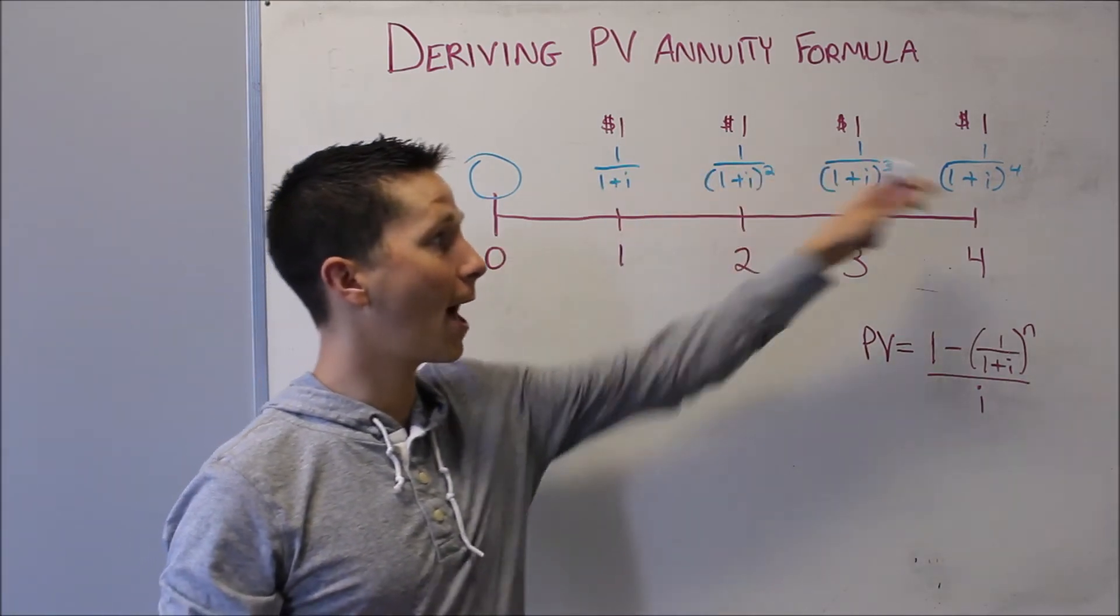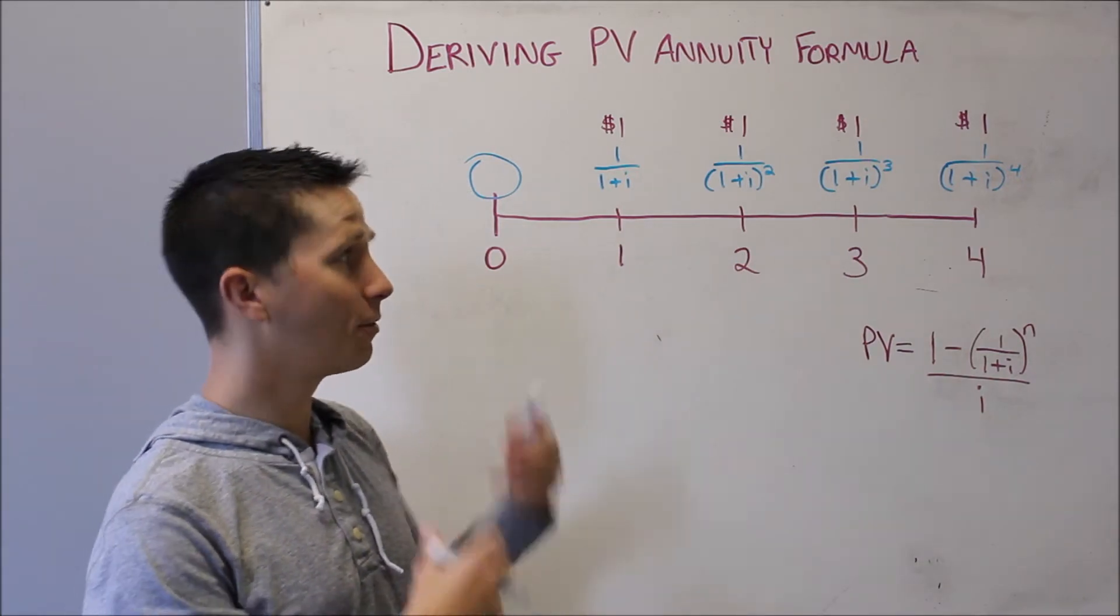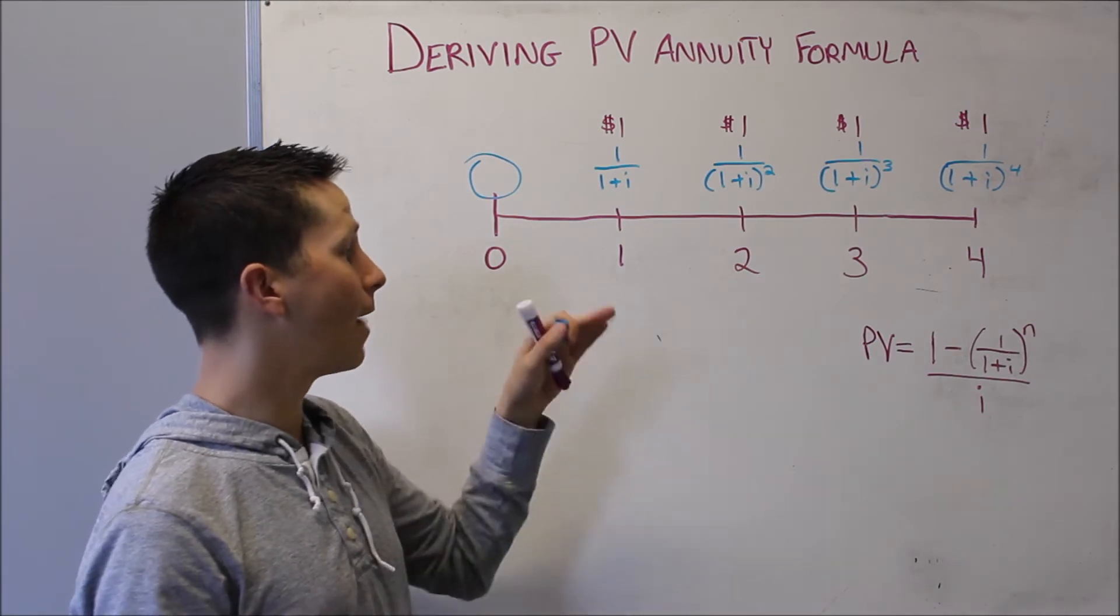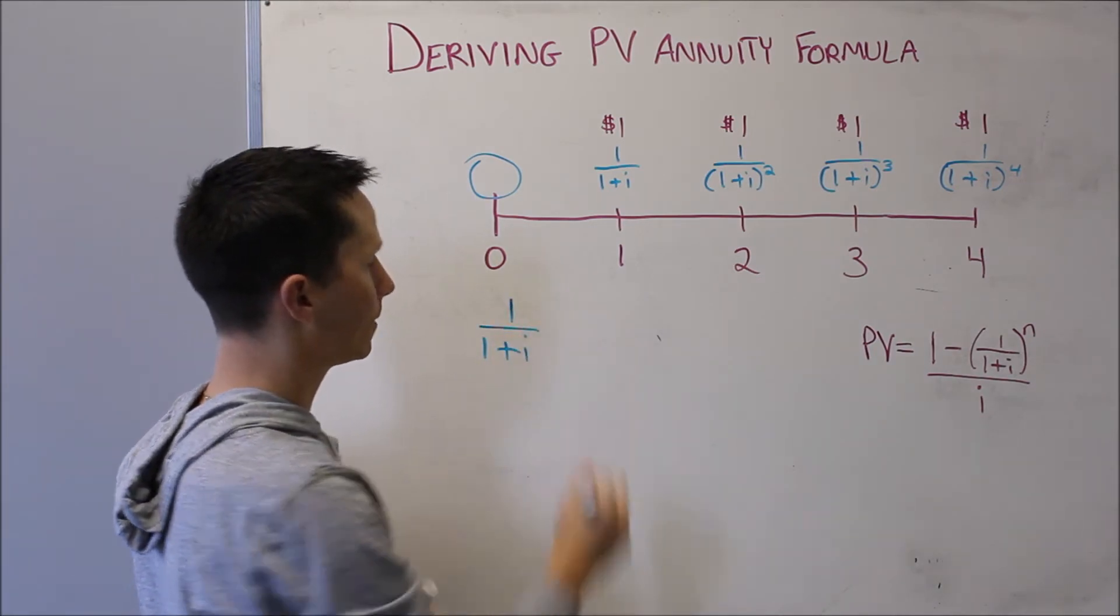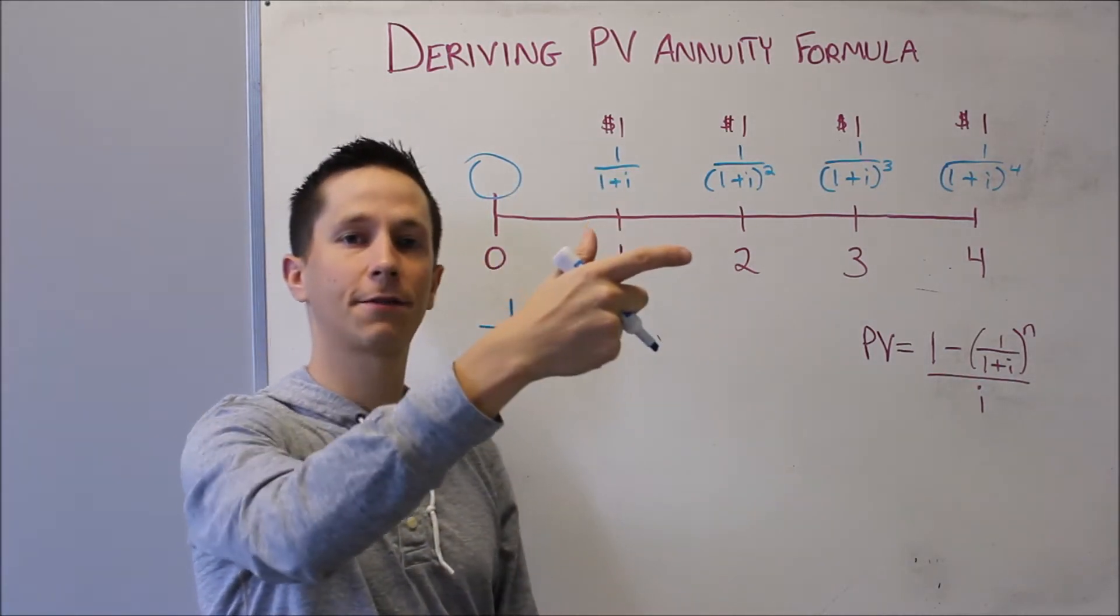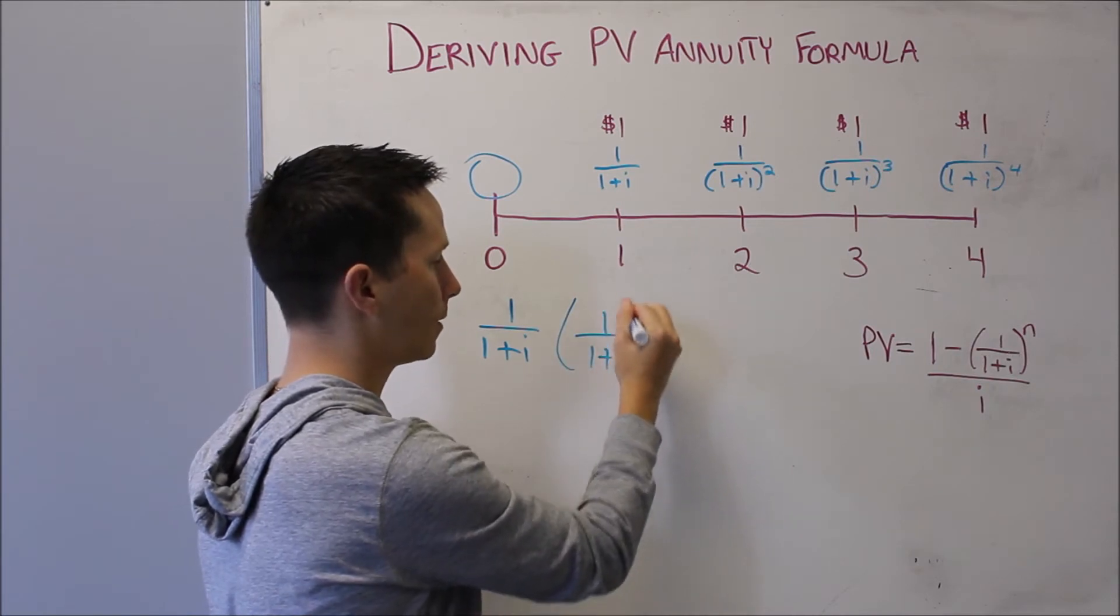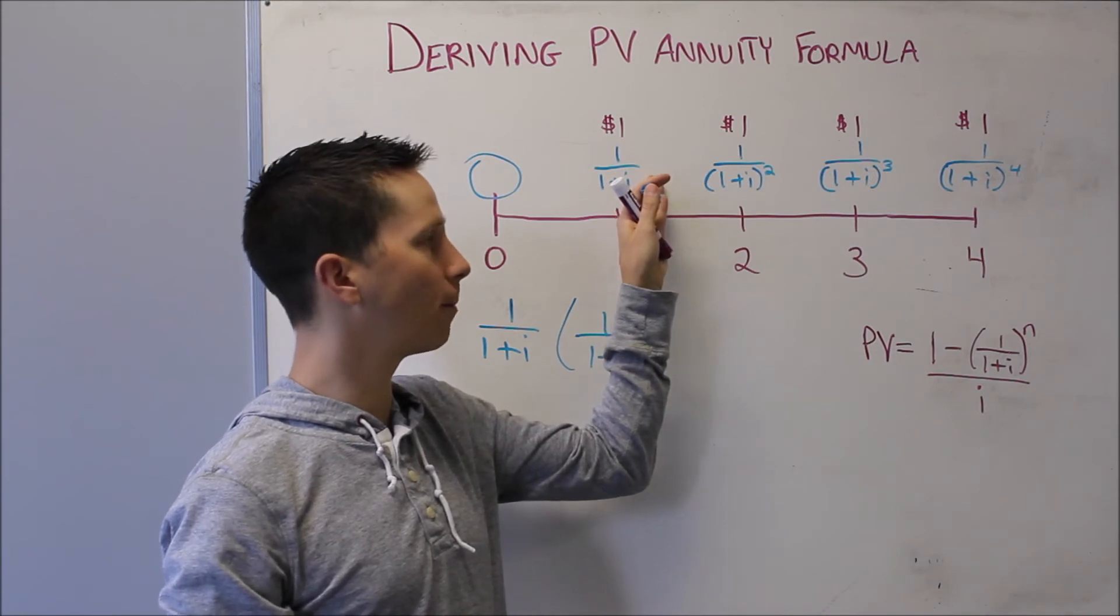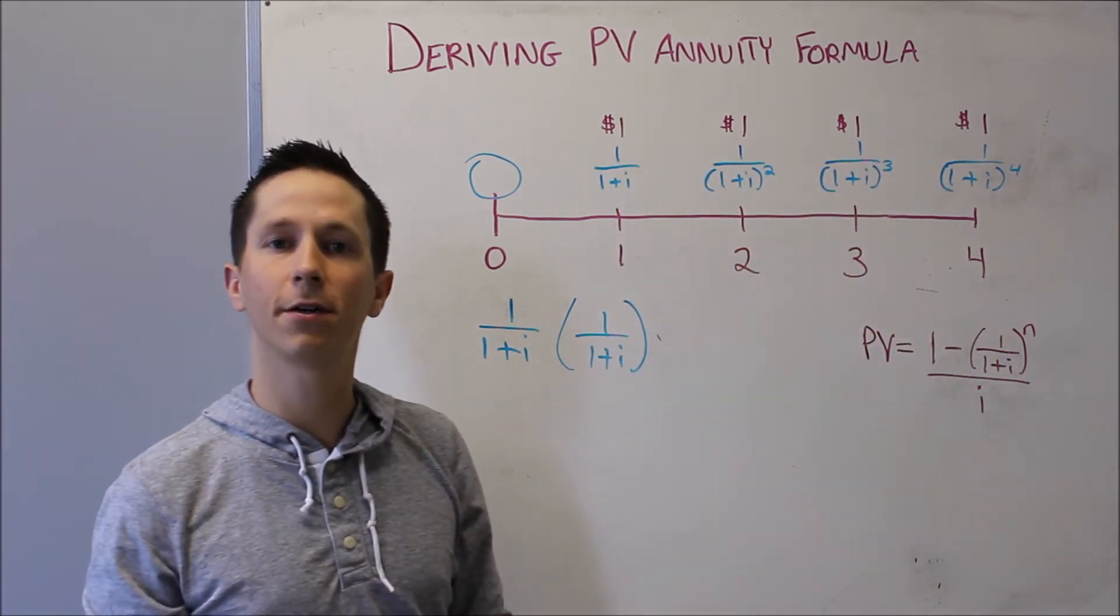So all we want to do is we want to add up all of these payments. Now, you could do that using a bunch of algebra, but it's much easier to see that the first term is 1 over 1 plus i. And then to get to each successive term, it's just multiplied by 1 over 1 plus i. That's each additional term. If you just multiply it by 1 over 1 plus i, you get to the next one. So this is a geometric series.